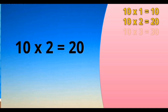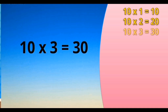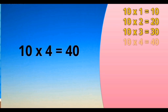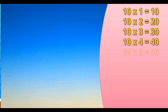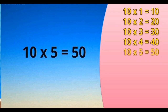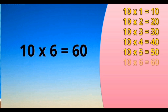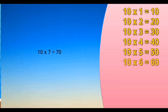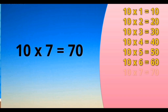10 times 3 is 30. 10 times 4 is 40. 10 times 5 is 50. 10 times 6 is 60. 10 times 7 is 70.